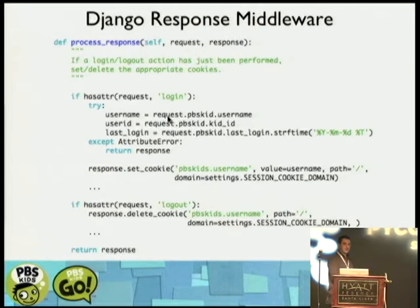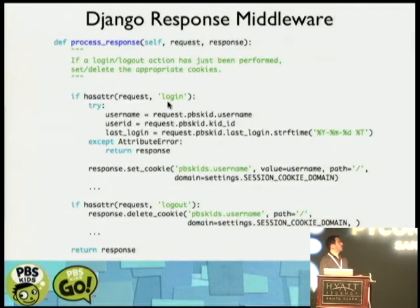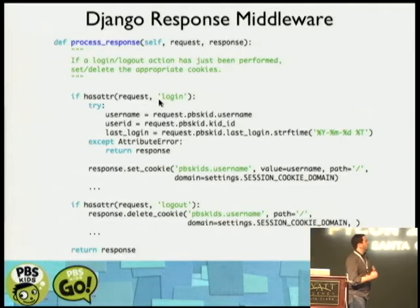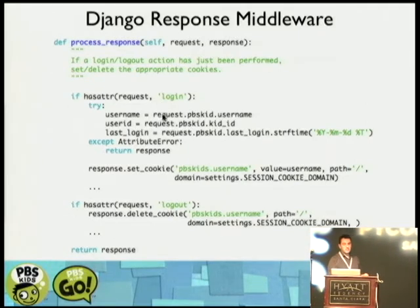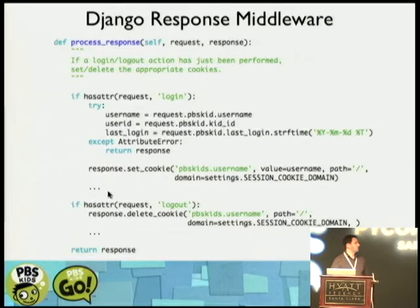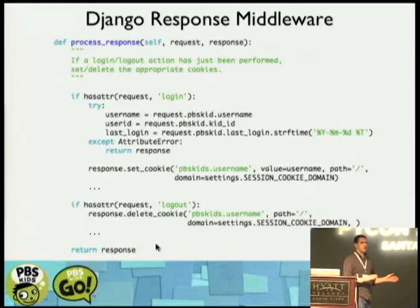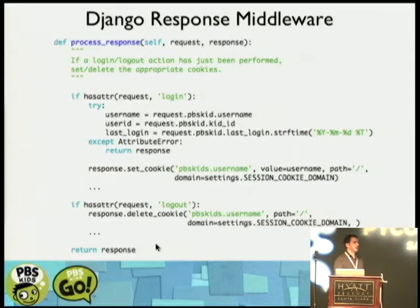In the response middleware, after the view has been processed and on the way back to the client, we set the session cookies. During the view, if a successful login has been performed, we set an attribute on the request and look for that attribute here to set the appropriate session cookies. If a logout has been performed, we delete all the session cookies. All cookies are session cookies — we never use permanent cookies; they all disappear at the end of the browser session.